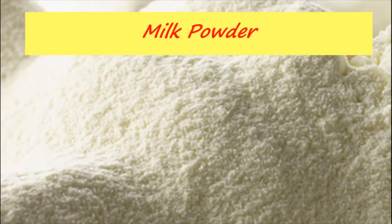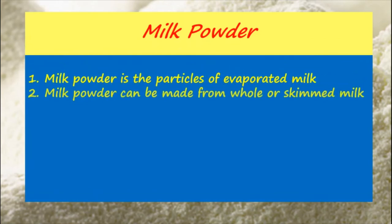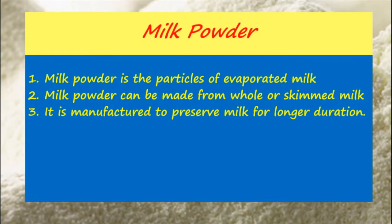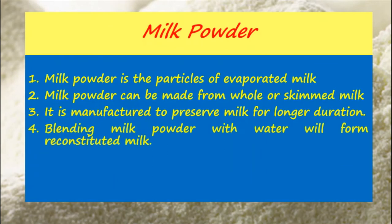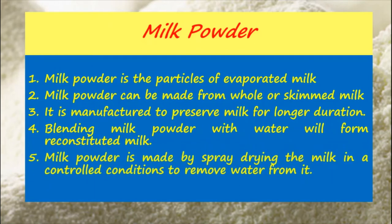Milk Powder consists of particles of evaporated milk and can be made from whole or skimmed milk. It is manufactured to preserve milk for longer durations. Blending milk powder with water will form reconstituted milk. Milk powder is made by spray drying the milk in controlled conditions to remove water from it.